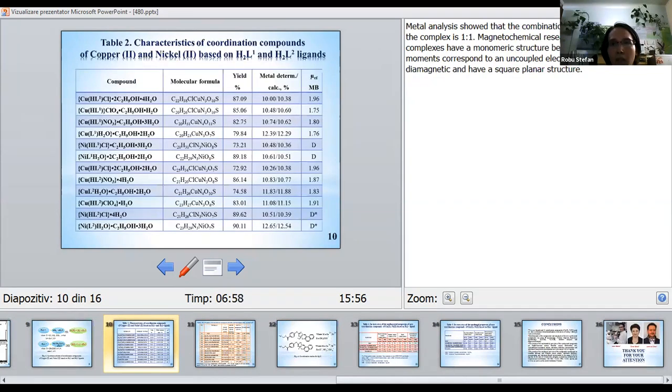Metal analysis shows that the coordination ratio of the metal and ligand in the complex is 1 to 1. Magnetochemical research has shown that the copper complexes have a monomeric structure because their effective magnetic moments correspond to one unpaired electron. Nickel complexes are diamagnetic and have a square planar structure.